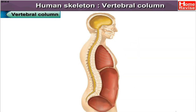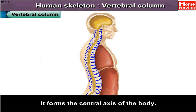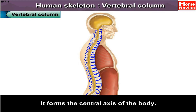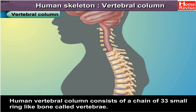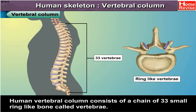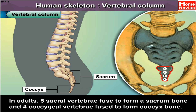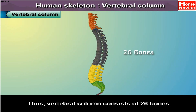The vertebral column is also called backbone or spine. It forms the central axis of the body. The human vertebral column consists of a chain of 33 small ring-like bones called vertebrae. In adults, five sacral vertebrae fuse to form a sacrum bone and four coccygeal vertebrae fuse to form a coccyx bone. Thus, the vertebral column consists of 26 bones.